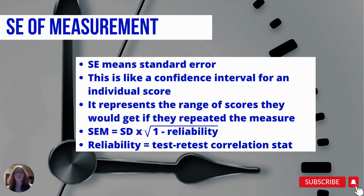But if there was not a perfect correlation — let's say it was 0.9 — then there would be some amount of error in the test. That would reflect the difference between when they took it and when they took it again. That correlation of those two repeats is your correlation statistic, which you plug in to get an individual standard error of measurement.